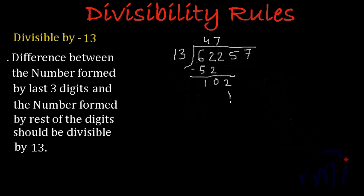And this will get divided 7 times. 7 times 3 is 21. 7 times 1 is 7 plus 2 is 9. So 13 times 7 is 91. If I subtract, 2 minus 1 is 1, and 10 minus 9 is again 1.